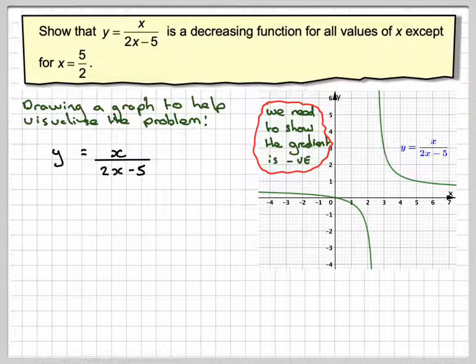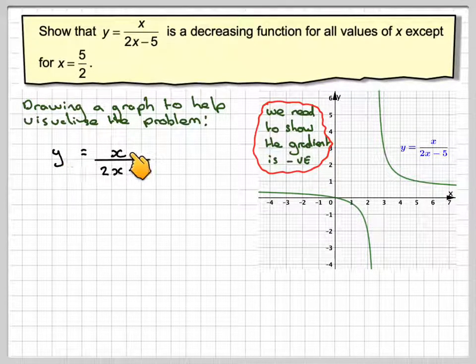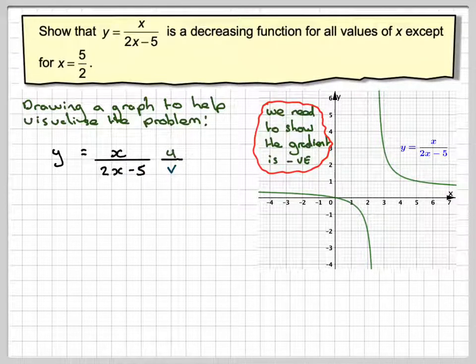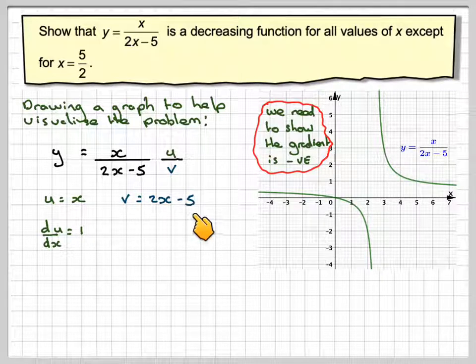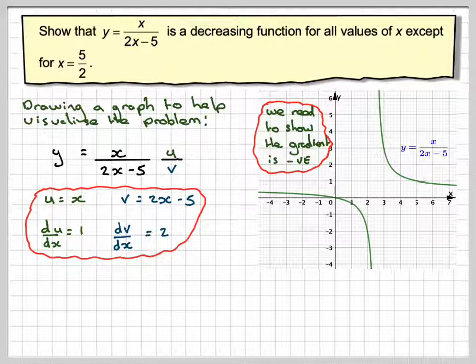So to find the gradient function we will need to differentiate. We've got y equals x over 2x minus 5, that's type u over v. If we let u equal x, du by dx will be 1. v is 2x minus 5 and if we differentiate there we're just going to get 2.